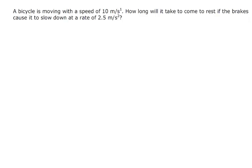A bicycle is moving with a speed of 10 metres per second. How long will it take to come to rest if the brakes cause it to slow down at a rate of 2 metres per second squared? Now, this time, we're decelerating. So this is actually going to be a negative value. So we've got V equals U plus AT.